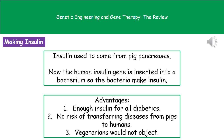An example of where we've used this is in making insulin. In the past, insulin used to come from pig pancreases in the abattoirs. But people like vegetarians would have had objections to having insulin that came from dead pigs. So these days what we do is we use bacteria to make perfect human insulin, because we've taken the human insulin gene from a human being and inserted it into the bacteria. So all those bacteria will make human insulin.